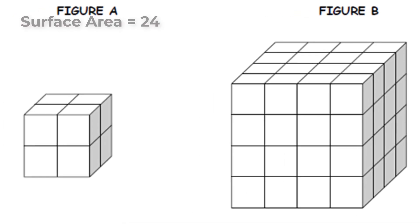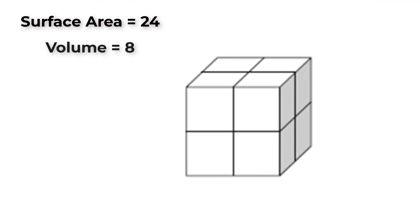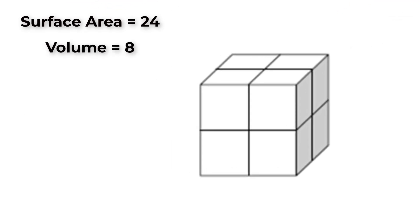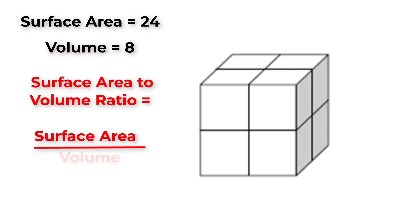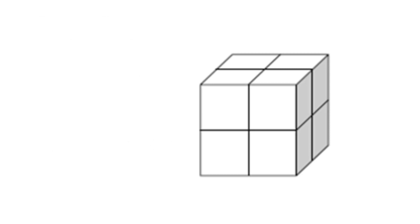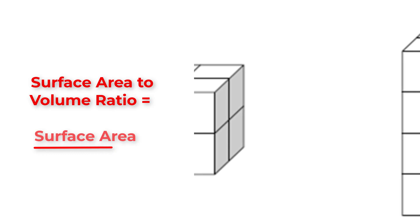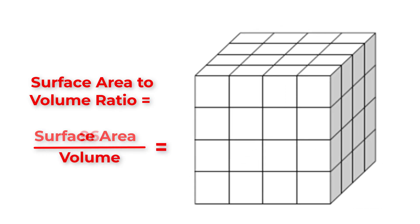Next, let's look at the surface area to volume ratio. For Figure A, we found the surface area to be 24 and the volume to be eight. To find the surface area to volume ratio, we'll divide the surface area by the volume, or 24 divided by eight, which equals three. The surface area to volume ratio for Figure B will be its surface area divided by its volume, or 96 divided by 64, or 1.5 blocks.